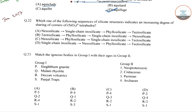In question 22, we have to find which of the following sequences of silicate structures indicates an increasing degree of sharing of the corners of SiO4 tetrahedra.